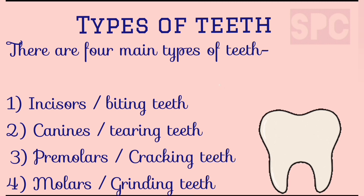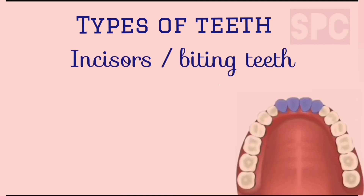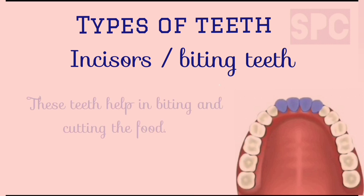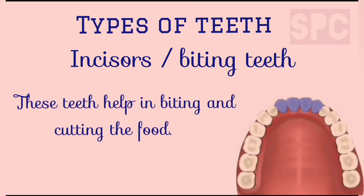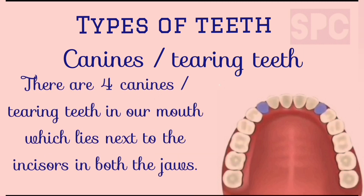We have four main types of teeth in our mouth, each performing a different function: incisors, canines, premolars, and molars. First are incisors, or biting teeth. There are eight incisors in our mouth — four each in the front of the upper and lower jaw. These teeth help in biting and cutting the food.